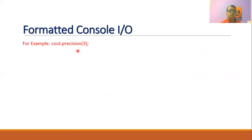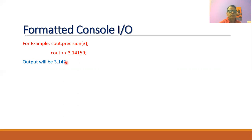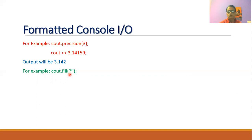To use the precision() method, we write the syntax cout.precision(3). Then whenever we write cout with the value 3.14159, the display will be 3.142 — the fractional value will be rounded and only three digits will be printed after the decimal point, because we have set the precision value equal to 3. To fill blank spaces with a certain character, we use cout.fill('*'), and this function will fill all the white spaces with the asterisk or star character.